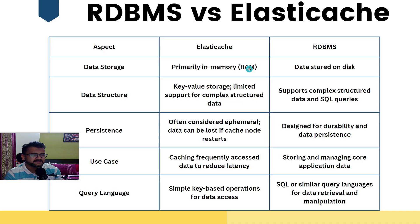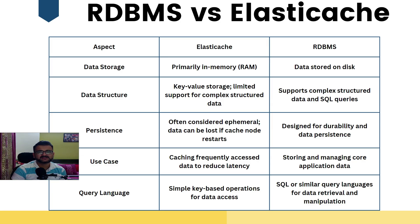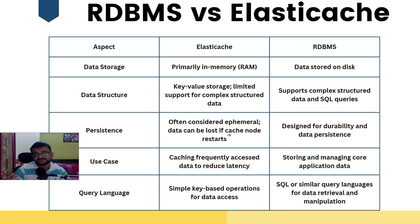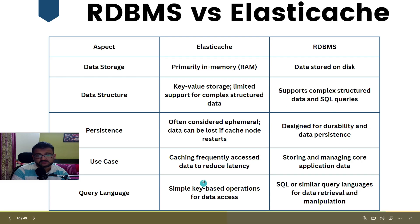Let's do a quick comparison between a traditional relational database (RDBMS) and ElastiCache. Data storage: ElastiCache is primarily in RAM; RDBMS is stored on disk. Data structure: ElastiCache uses key-value with limited support for complex structures — it's for quick access, since RAM has very limited and ephemeral memory. RDBMS supports complex queries. Persistence: cache data is often ephemeral and can be lost if a cache node restarts, whereas RDBMS has durability and persistence.